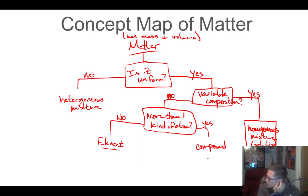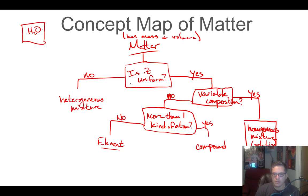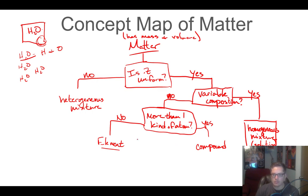Let's work through an example: pure H2O. Is it uniform? Yes, everything in here is water. Does it have variable composition? Well, everything is H2O, so no, it does not have variable composition. Does it have more than one kind of atom? Well, H2O is made of hydrogens and oxygen — so yes, it does have more than one kind of atom. Therefore, water is a compound. So if you have a container of pure water, it's a compound.